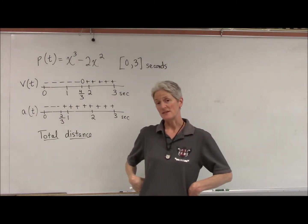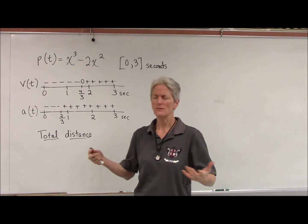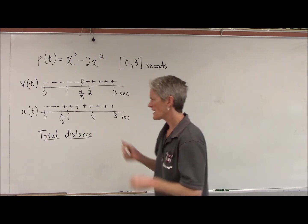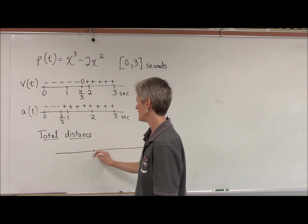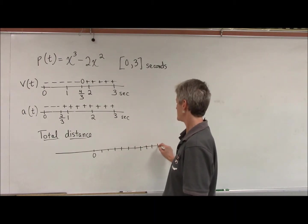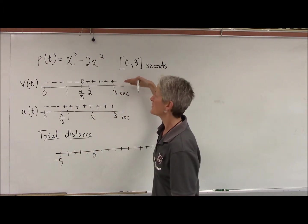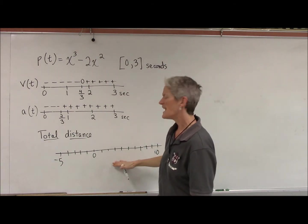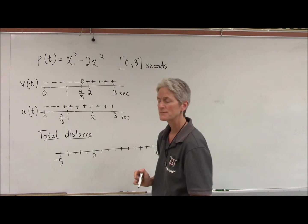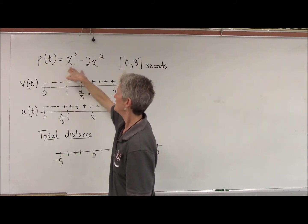Let's see if we can find the total distance. Distance is different from displacement — you can't have negative distance; distance is always positive. To find the total distance, I'm going to track where this particle is in space. I'm going to make a number line here. These number lines up here were telling me about the velocity and acceleration at different times; this number line is showing me the position of the particle as it moves left and right. At time 0, at the beginning of our story, the particle is at 0.